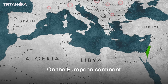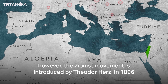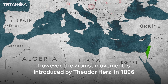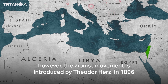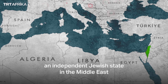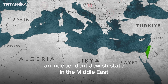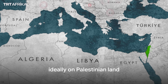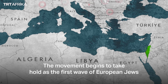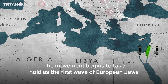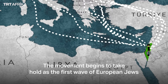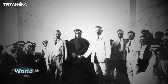On the European continent, however, the Zionist movement was introduced by Theodor Herzl in 1896. It aimed to create an independent Jewish state in the Middle East, ideally on Palestinian land. The movement began to take hold as the first wave of European Jews started to migrate to Palestine.